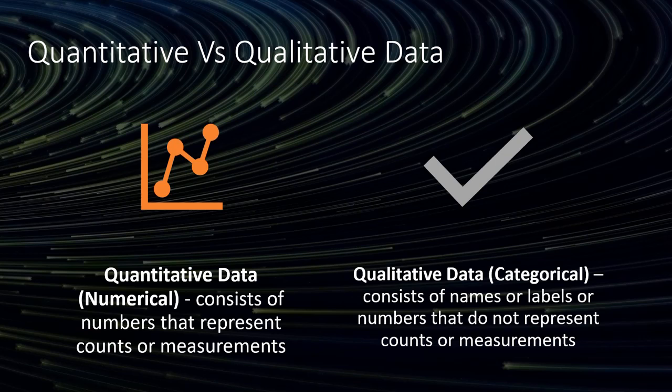Okay, so quantitative is numerical data, but you have to be careful that those numbers are representing a count or measurement. Qualitative type data is a category. Let's do some examples.